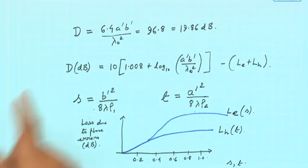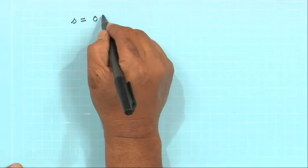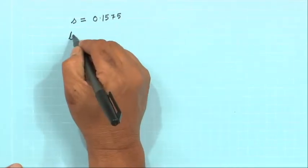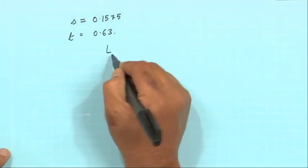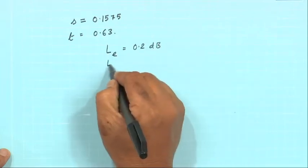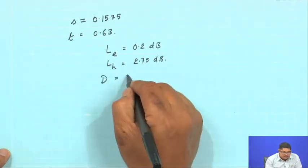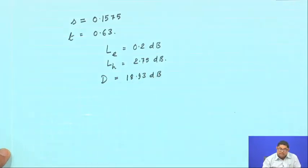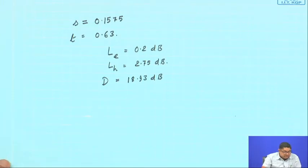If we do that for the same problem, S will be something like 0.1575 and t turns out to be 0.63. From the graphs, L_E is 0.2 dB and L_H is 2.75 dB. Putting those in you get 18.93 dB. You see, instead of 19.86 dB from the first formula, that is not so far off. There is also another formula I will not go into.